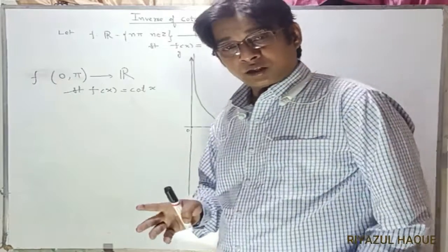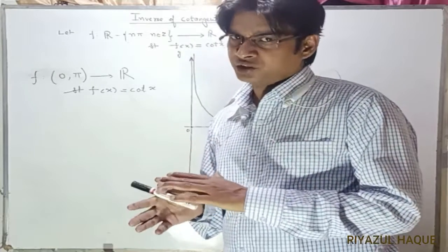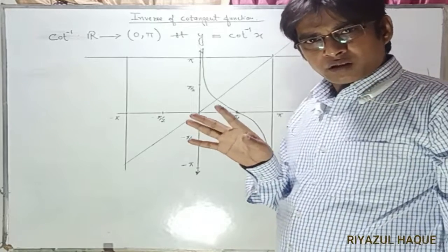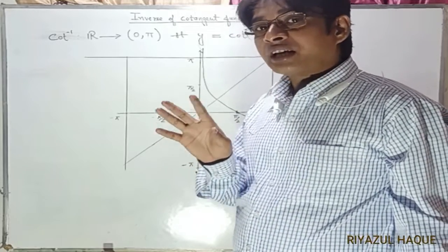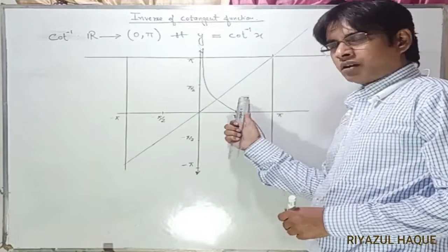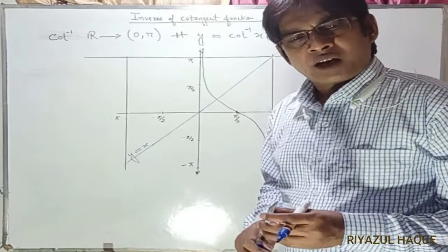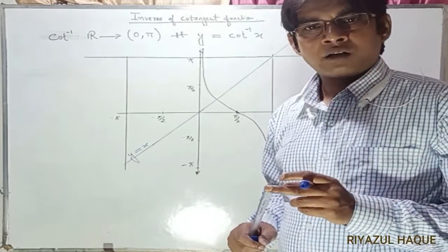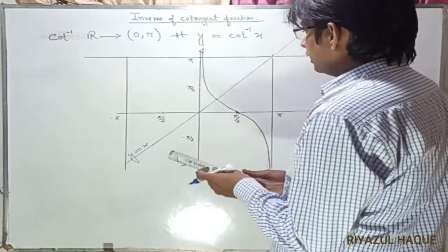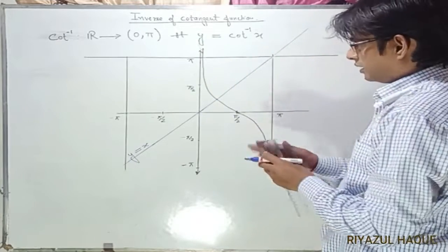Now, how can we draw the graph of the cot inverse function? When we talk about inverse, the domain becomes the range and the range becomes the domain. We fix the domain range from 0 to π. We draw the line y = x, which acts as a mirror line. Each point on the cot graph makes a reflection across this line.